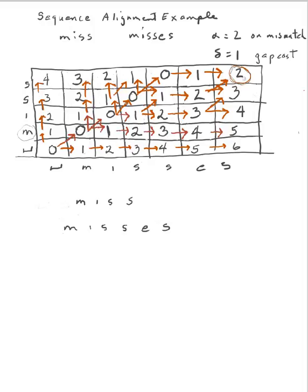When looking to reconstruct where that came from, I can either compute the three places that came from — here, here, or here — and then choose the minimum to decide which path to go down. In this case I've already recorded how I got to this 2: by adding 1 to this one, advancing on both 'miss' and 'misses', and doing a match between the S of 'miss' and the last S of 'misses'. So let's go ahead with this 2 and see what our sequence alignments will be.